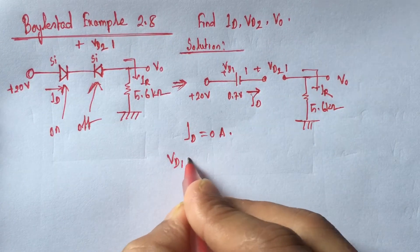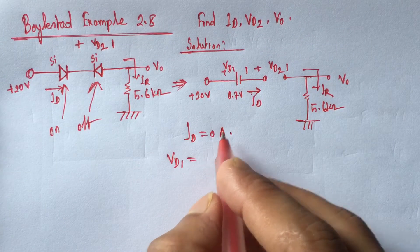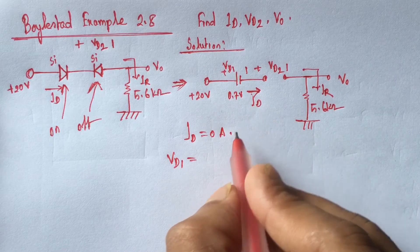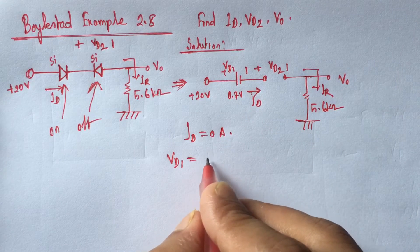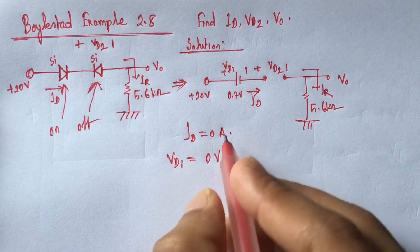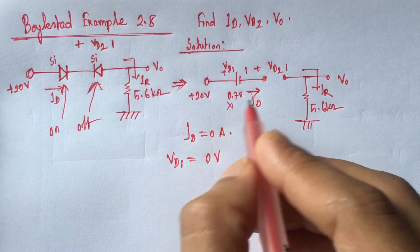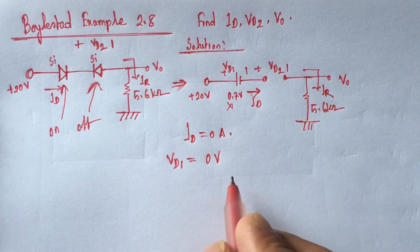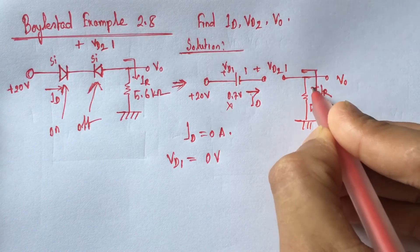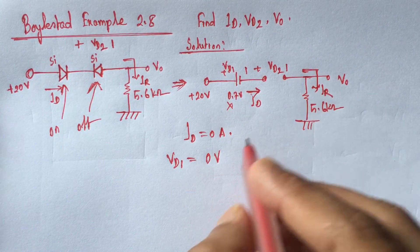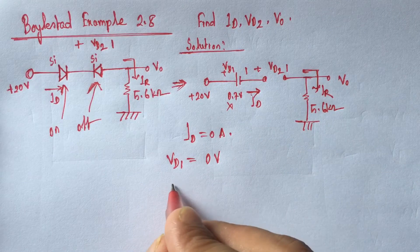also be 0 since this is a multiplication of the current ID through the resistance, so this will be also 0 volt not 0.7 volt. Now since the current ID and IR are equal and both are 0, so V